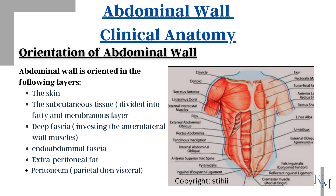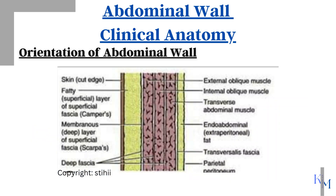From outward to inward, we have the skin, the subcutaneous tissue, which is divided into two layers below the umbilicus — the outer layer is fatty, while the inner one is membranous. Deeper to it is the deep investing fascia, which encloses our three flat anterolateral muscles in three layers on both sides.